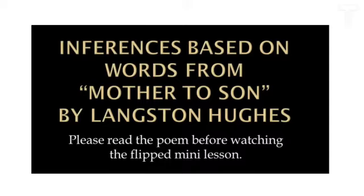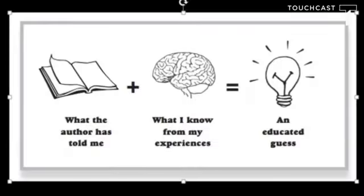Please read the poem before watching the flipped mini lesson. The formula for making inferences is this: what the author has told me, plus what I know from my experiences, equals an educated guess.